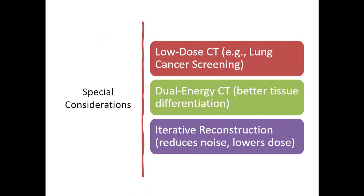Advanced CT techniques now incorporate machine learning and AI, allowing for more sophisticated dose optimization and image quality improvements. For example, ultra-low-dose CT is used for screening applications such as lung cancer detection. Dual-energy CT uses two different kVP settings to enhance tissue contrast and material differentiation. Iterative reconstruction reduces image noise while maintaining low radiation exposure, breaking the traditional trade-off between image quality and radiation dose.